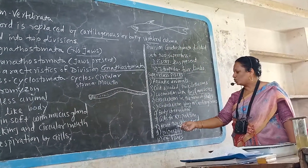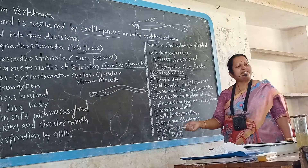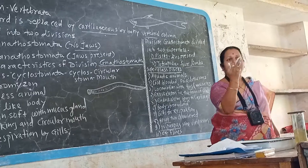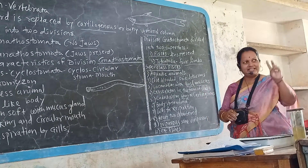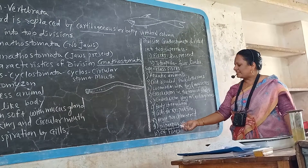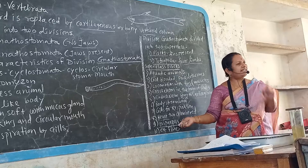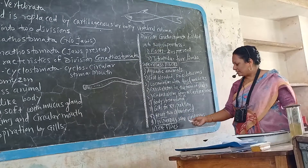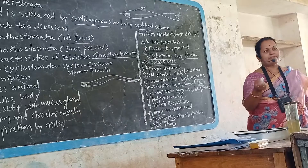The heart in Pisces is two-chambered, compared to the four-chambered heart in human beings. Pisces are mostly oviparous, meaning they lay eggs, though some are viviparous, such as the seahorse, which gives birth to young ones directly.